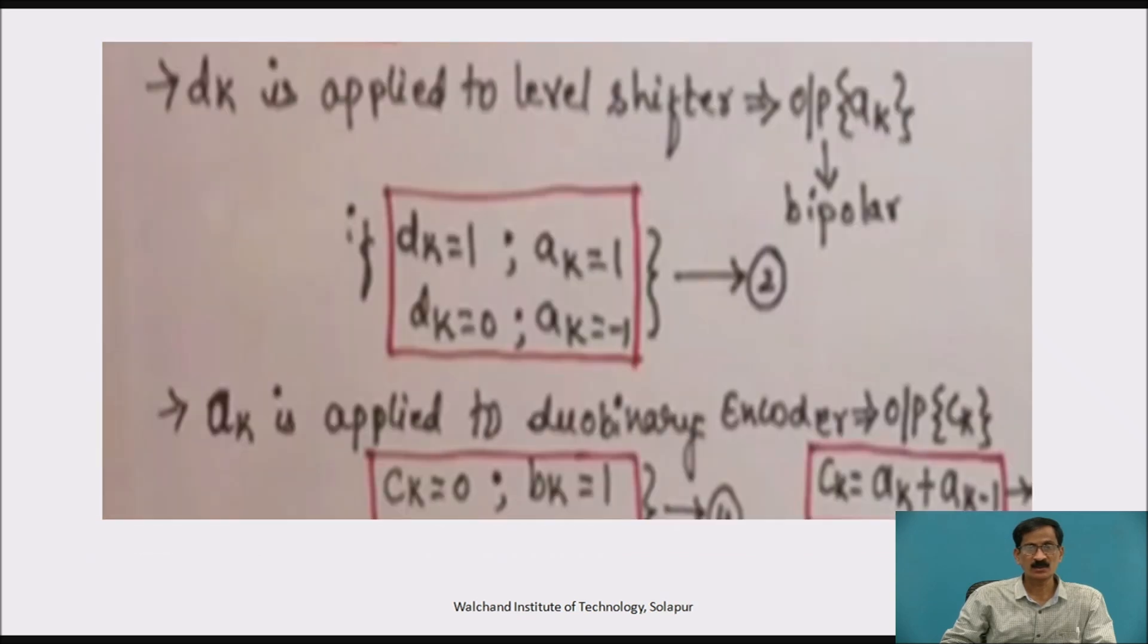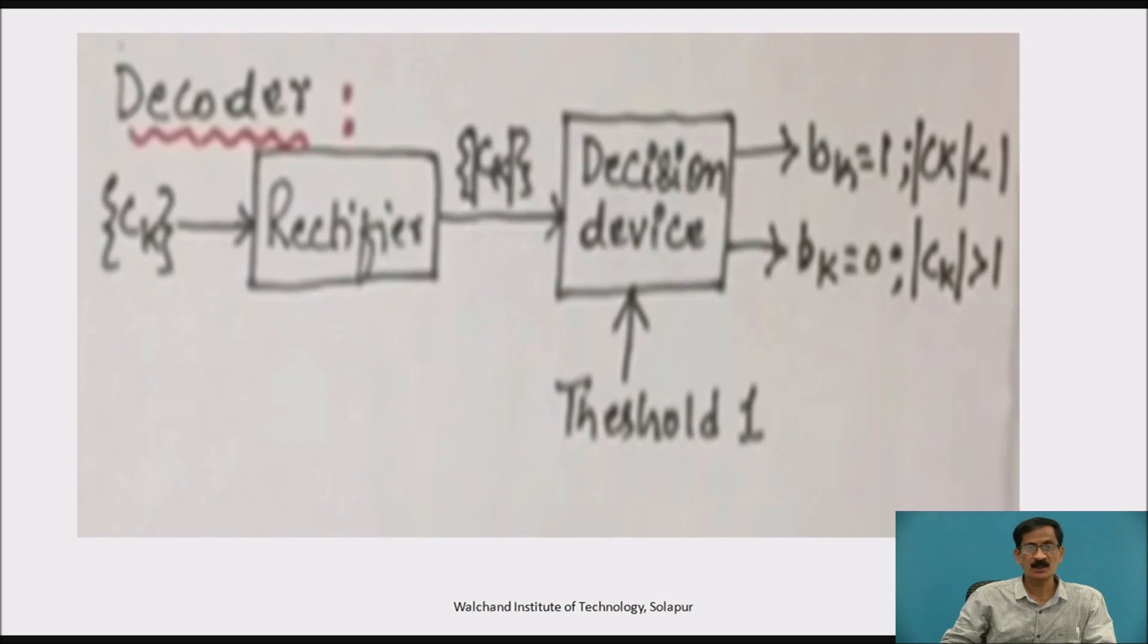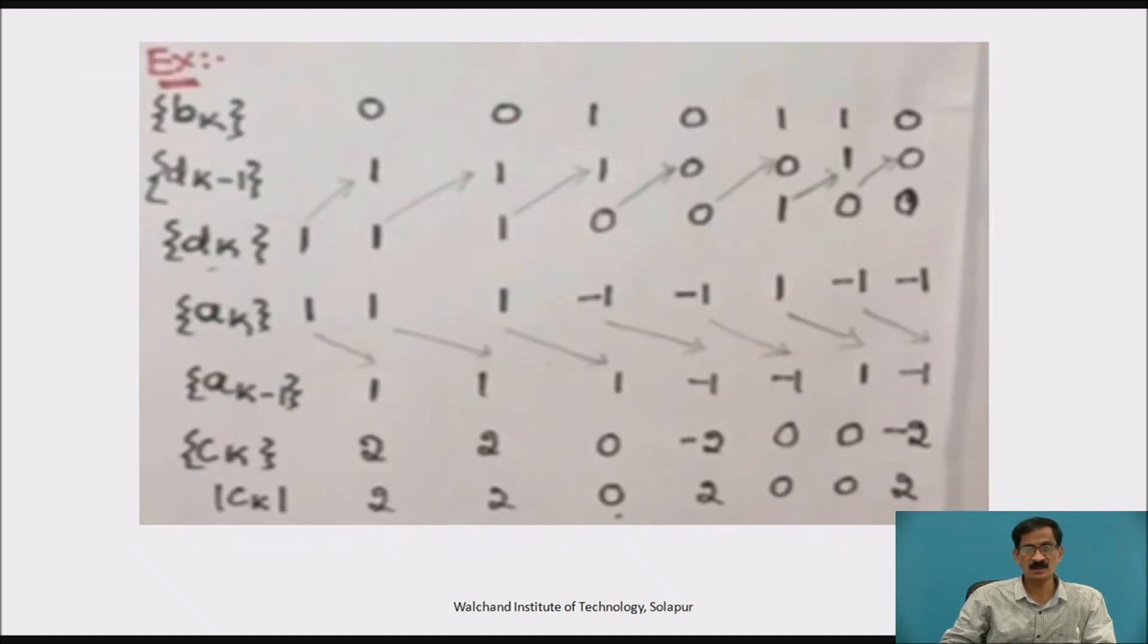So, this is what has been explained. Now, the next part is duobinary encoder that will output is c k. So, c k will be equal to 0 if b k is equal to 1. At the decoder, as it has been explained, the received signal is c k. It is given to rectifier to get the magnitude and then it is given to decision device that will decide the output b k. The original sequence b k will be equal to 1 if c k is less than 1 or b k is 0 if c k is greater than 1. So, this is the interesting table.